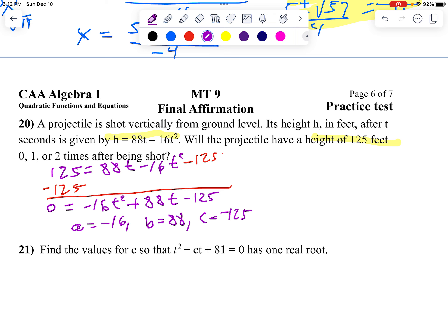So now I'm going to say b squared minus 4ac. How many solutions can there be? Well, b is going to be 88. 88 squared minus 4 times a, which is negative 16, times c, which is negative 125. We have three negatives this time, so we're going to subtract it.